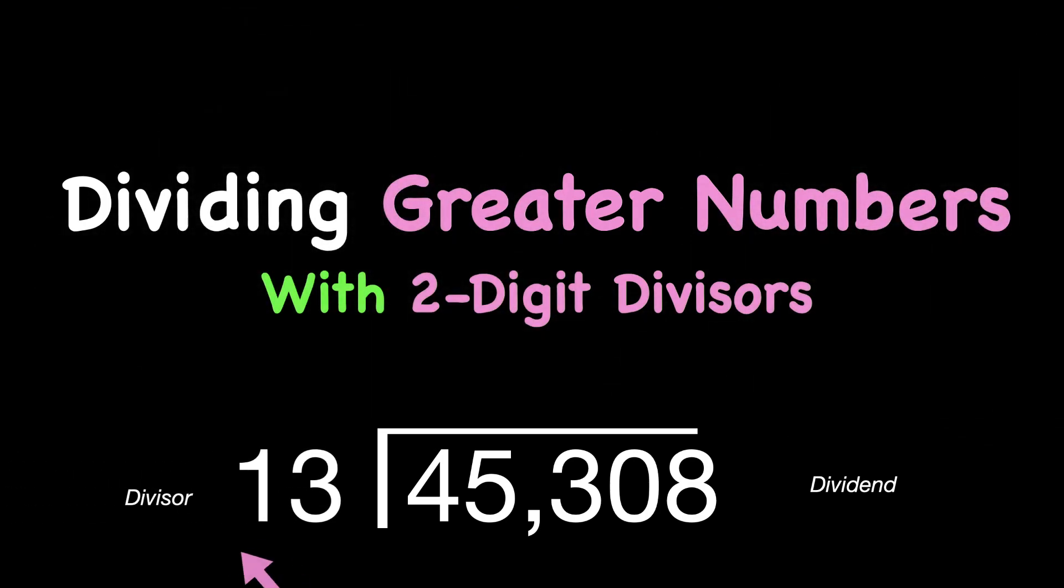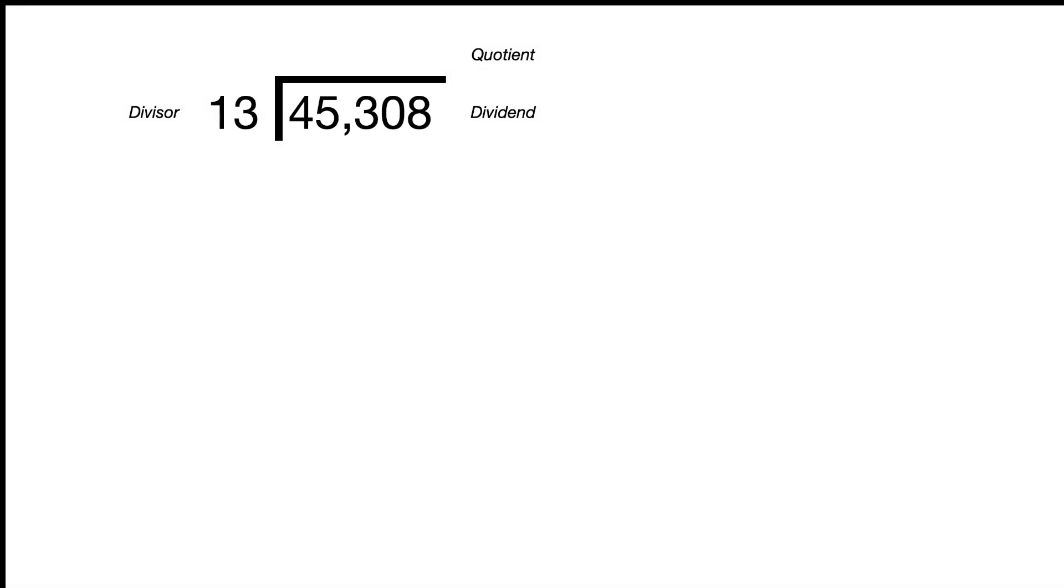Two-digit divisors means that the number we're dividing by has two place values, in this case the tens and the ones place value.